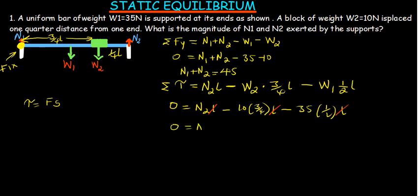And what are we going to have here? This will be zero is equal to N2 minus 10 multiplied by three divided by four. So that is 10 times three divided by four, which is 7.5, and then minus 35 divided by 2, which is 17.5. So this will give us zero being equal to N2 minus 7.5 minus 17.5. This is going to give us 25. So taking 25 to the other side, that will give us N2 being equal to 25 newtons.